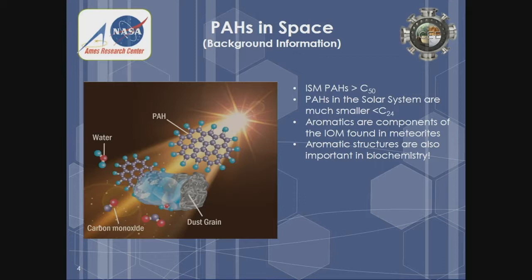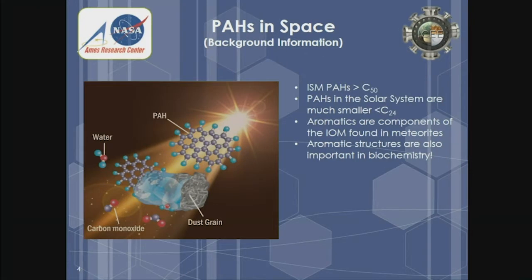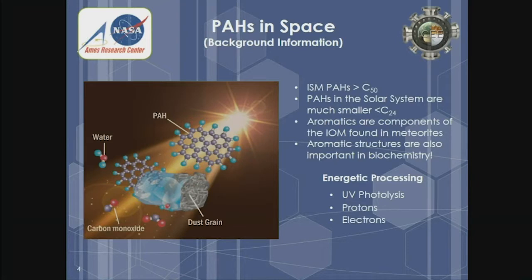In the solar system, PAHs are usually about 24 atoms or smaller. Aromatic molecules such as PAHs also make up components of the insoluble organic material we find in meteorites. The aromatic structures are also important in biochemistry — a lot of our biochemistry involves cyclic carbon structures or even aromatic structures. What's interesting about the PAHs is what happens when they undergo energetic processing. We know they're in the ISM as large molecules, and when the protosolar nebula forms, or even in areas within our own solar system, you have high energetic particles — UV photolysis, high energy protons and electrons.